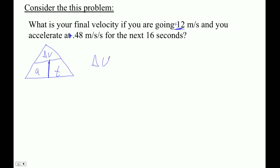It turns out that a is 0.48 meters per second squared, and t is 16 seconds, and that allows us to cancel out one of our seconds. We end up with 7.68 meters per second, faster than you're going already.